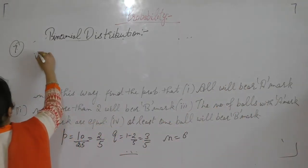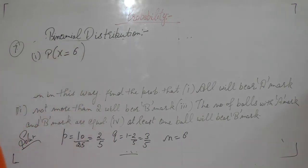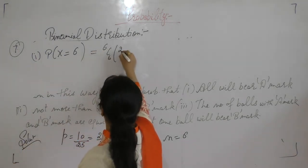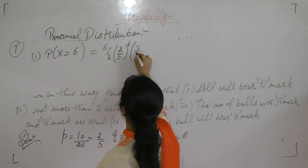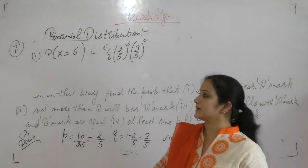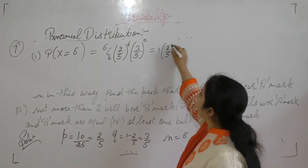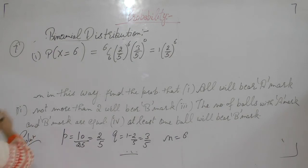First part: all will bear A mark. We draw 6 balls, so all will be A mark means R is 6. Using the formula P^R times Q^(N-R): 6C6 times (2/5)^6 times (3/5)^0. Since 6C6 equals 1 and (3/5)^0 equals 1, the probability is (2/5)^6.